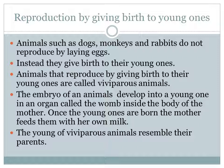Next, reproduction by giving birth to young ones. Yesterday we discussed oviparous animals; today we will discuss viviparous animals. What are viviparous animals? Animals that reproduce by giving birth to their young ones are called viviparous animals. Dogs, monkeys, and rabbits do not reproduce by laying eggs — instead they give birth. The embryo of an animal develops into a young one in an organ called the womb, inside the body of the mother.